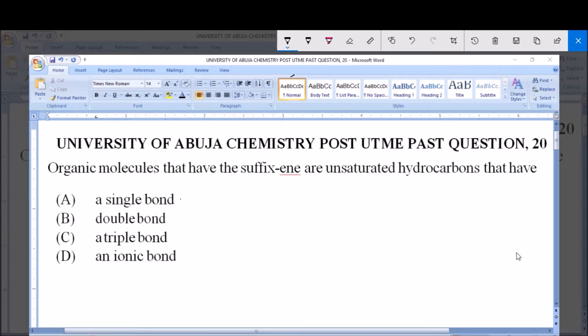C) triple bonds, and D) ionic bonds. Now in organic chemistry, we have what we call saturated and unsaturated hydrocarbons.